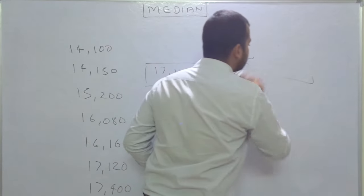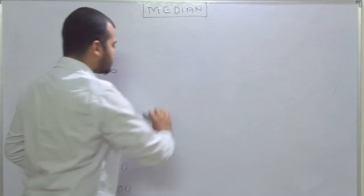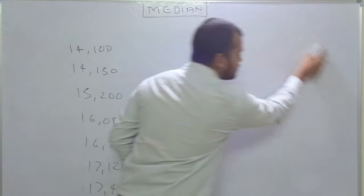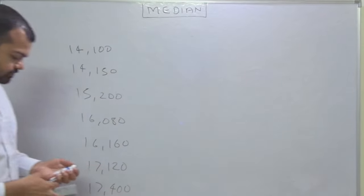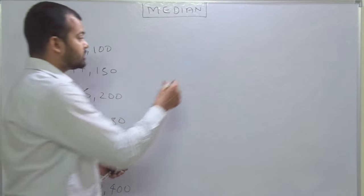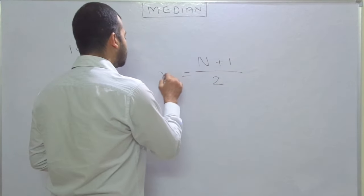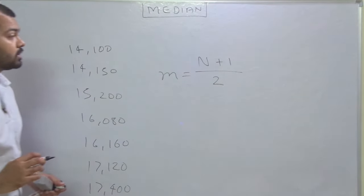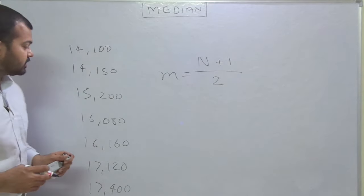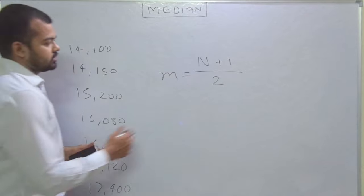Now the formula for median is very different. This is (n+1)/2. This is the formula for median. Here n means total number of values: one, two, three, four, five, six, seven.